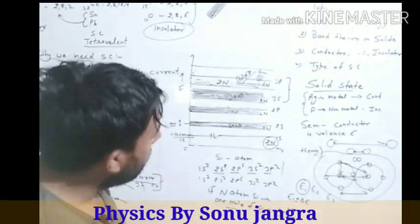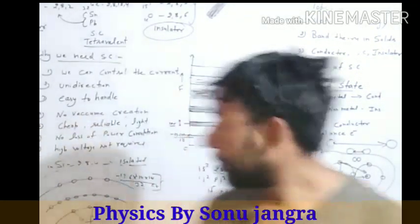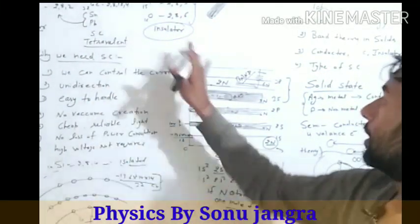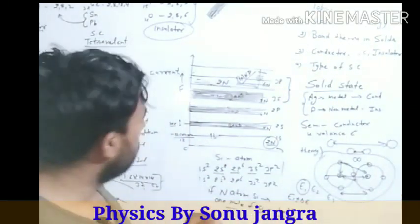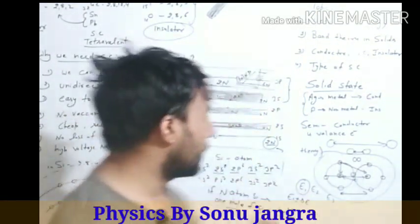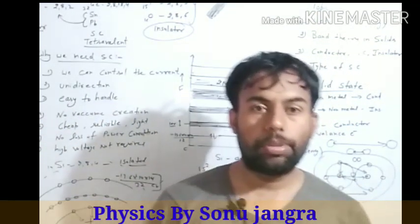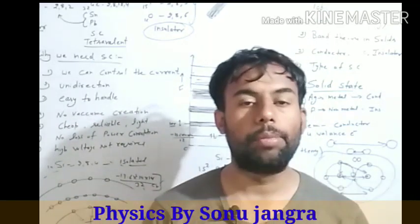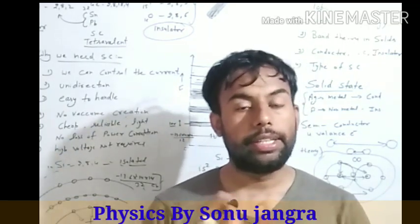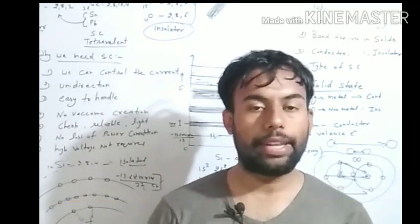In summary, today we discussed why we need semiconductors, the three different types of solid materials — conductor, semiconductor, and insulator — and started the band theory. In the next video, we will discuss how energy bands split for a complete solid with many electrons, how the bands form in semiconductors. Thank you — I hope you enjoyed the video. The last two videos on logarithms are linked in the description. The next video will come after two or three days.